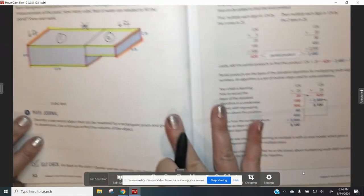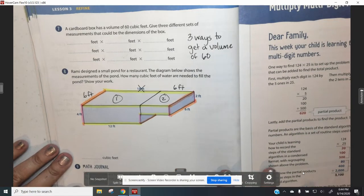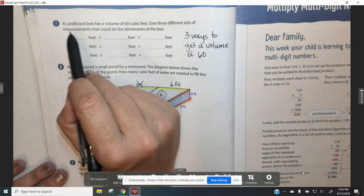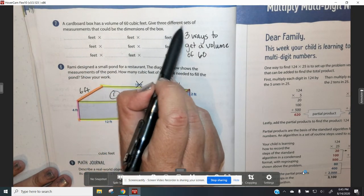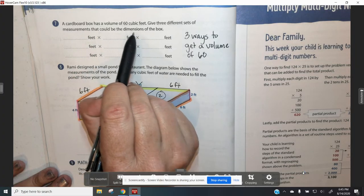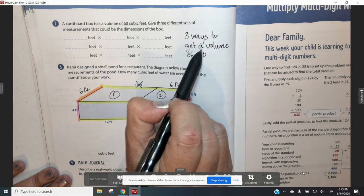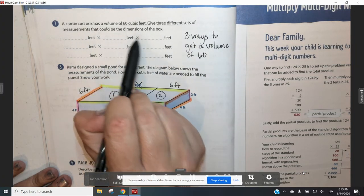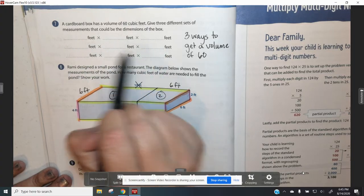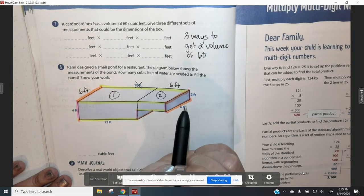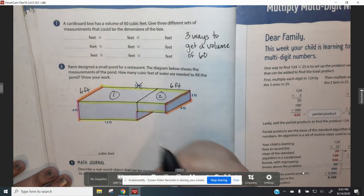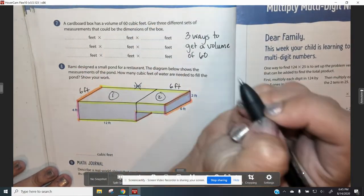Go ahead and turn to page 52. On number seven, there is a cardboard box that has a volume of 60 cubic feet. Give three different sets of measurements that could be the dimensions of the box. So you need to figure out three ways that you could multiply out to get a volume of 60. So I'll give you one to help you out. If you had a cardboard box that was two feet by three feet...